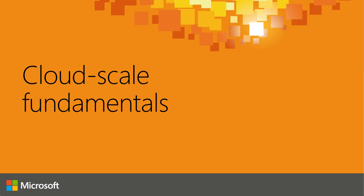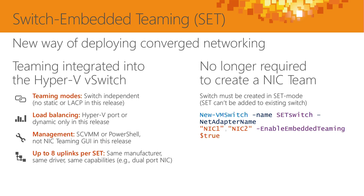Going back to cloud scale fundamentals, I want to talk about changes at the Hyper-V host layer that make things better in this next release. Everything in that demo was running on 2016 Technical Preview 3. When you create a NIC team today in Windows Server 2012 R2, you select your NICs in Server Manager, create the team, then go to Hyper-V Manager, create the V switch, and bind it to that team. Multiple steps, multiple layers the traffic has to pass through. We just don't need all those layers. That's what switch-embedded teaming is all about in the next release of Windows Server.